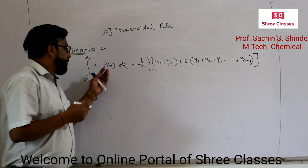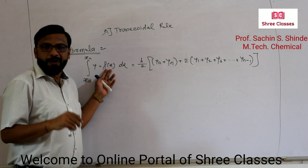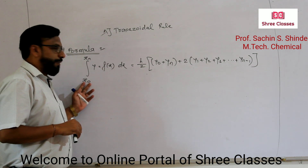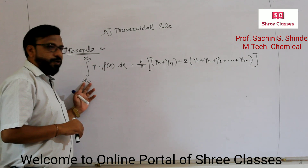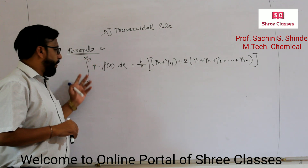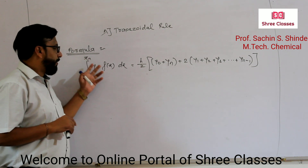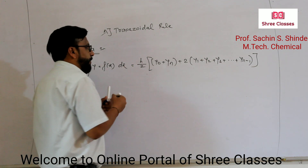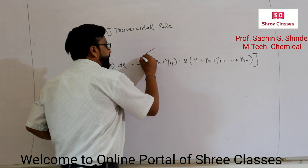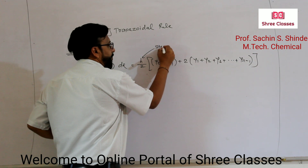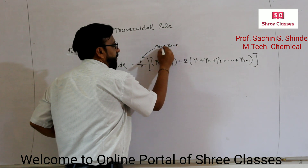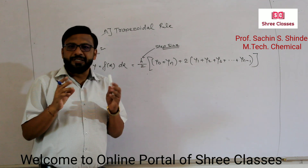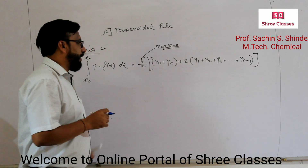Now, what is this formula? This is the function that is given in the problem. We have to integrate this function with respect to x from the limit x0 to xn. x0 is the lower limit and xn is the upper limit. These are given, and this function is also given. h means step size — that is, the difference between two consecutive x values.